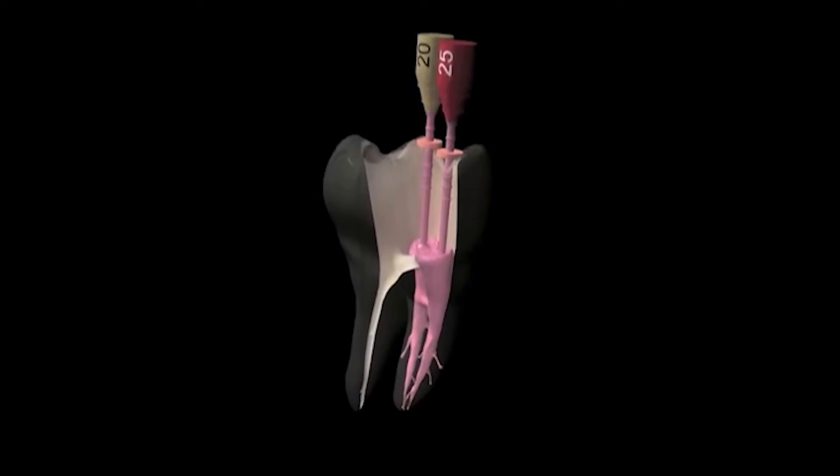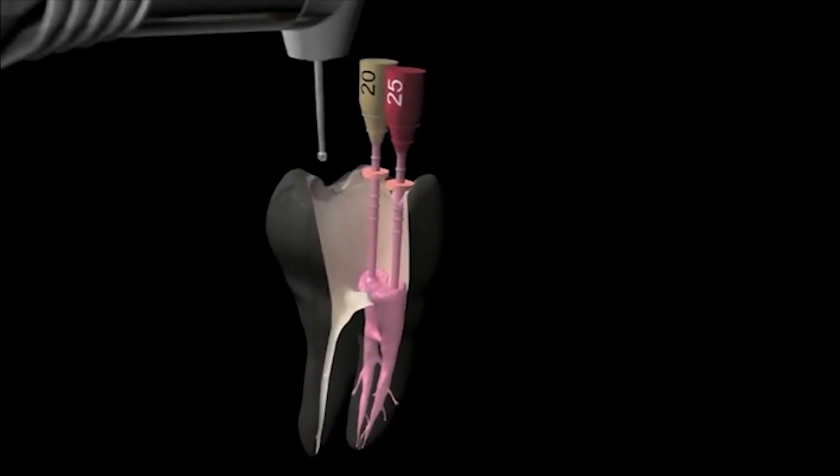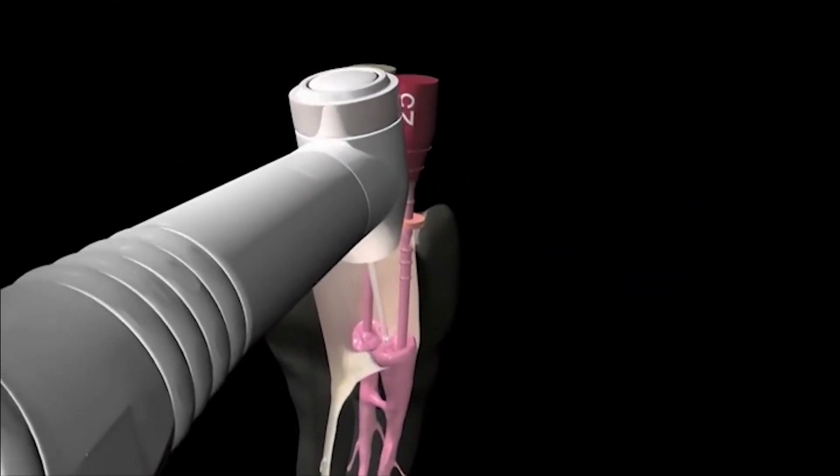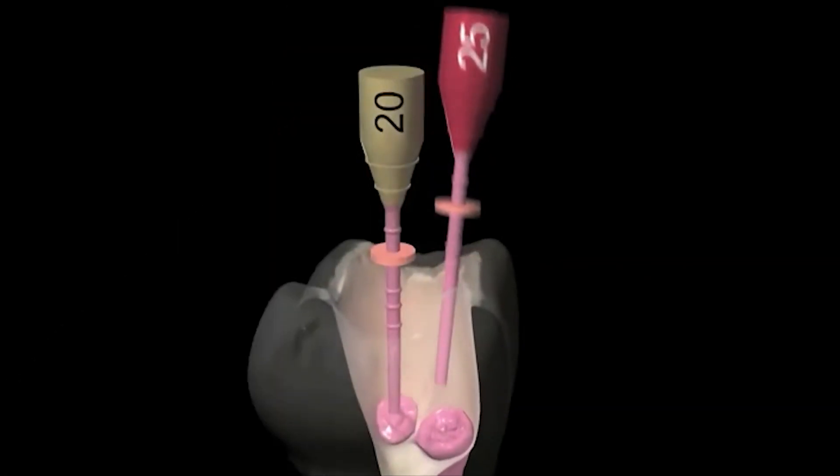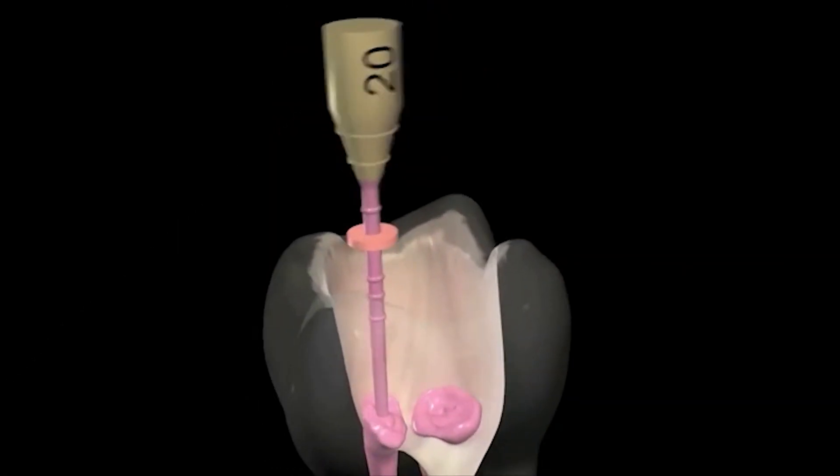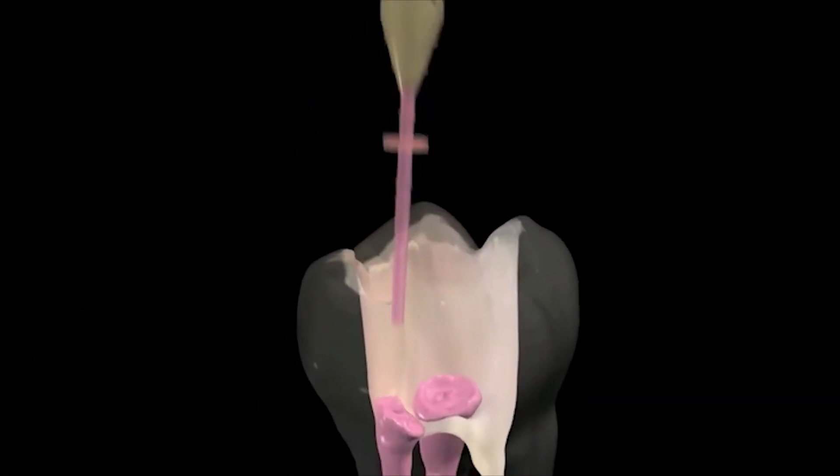When Guttapercha Core reaches its working length, use a round burr to sever the obturator at the canal orifice. You can also remove it by bending from side to side without impacting the seal.